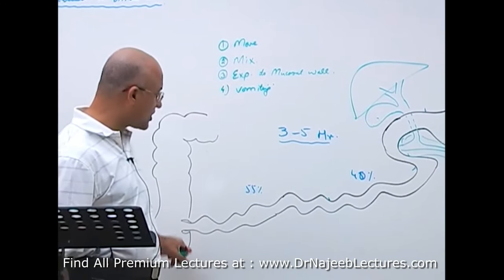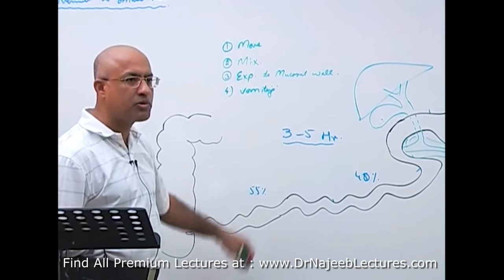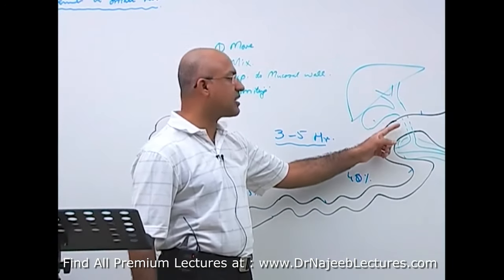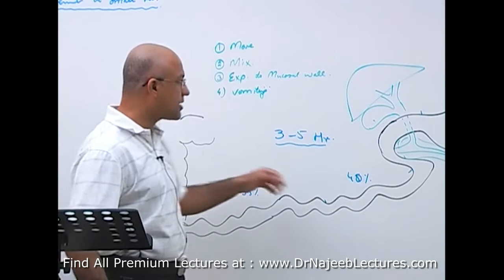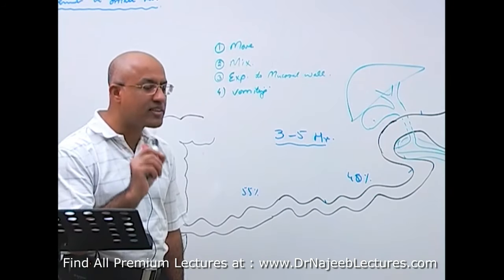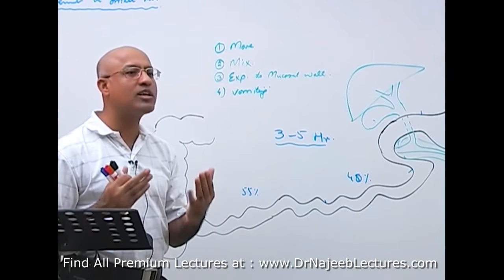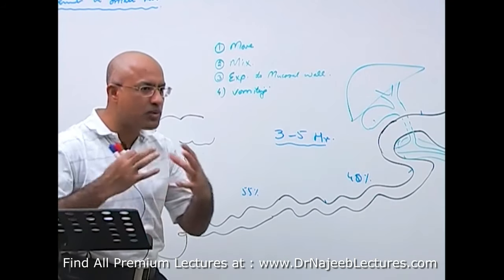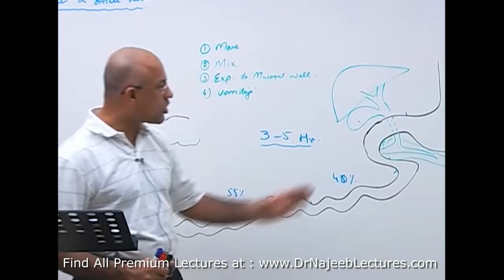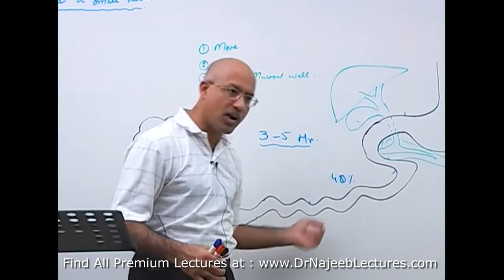It takes about three to five hours to move the contents of the small intestine from the duodenum through the jejunum up to the ileocecal valve. Sometimes this becomes faster and other times slower. It depends on the nutrients present in the chyme. If the chyme is very rich in nutrients, more time is needed for digestion and absorption, so movement becomes slow. If the chyme is poor in nutrients, movement is faster.